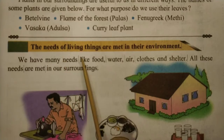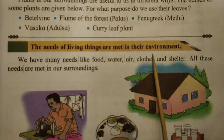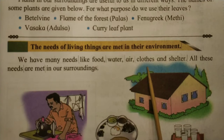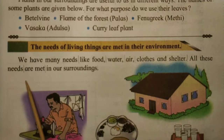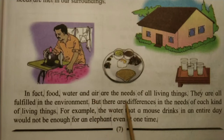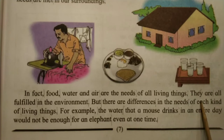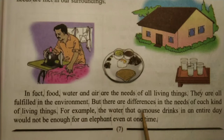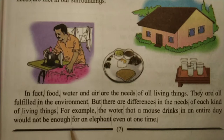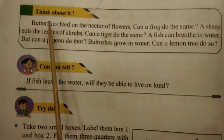The needs of living things are met in their environment. We have many needs like food, water, air, clothes and shelter — all met in our surroundings. Food, water and air are the needs of all living things. But there are differences in the needs of each kind. For example, the water a mouse drinks in an entire day would not be enough for an elephant even at one time.